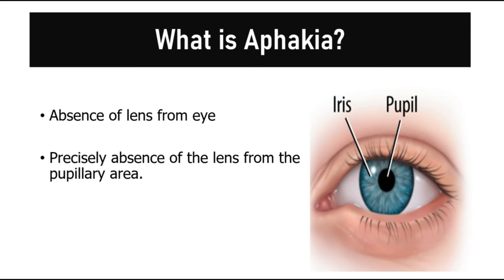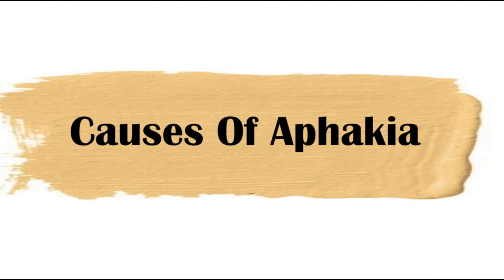What is meant by aphakia? Aphakia is simply the absence of the lens from the eye. Sometimes the lens might get subluxated or dislocated from its normal position, and in such cases when there is absence of lens from the pupillary area, that is also referred to as aphakia.